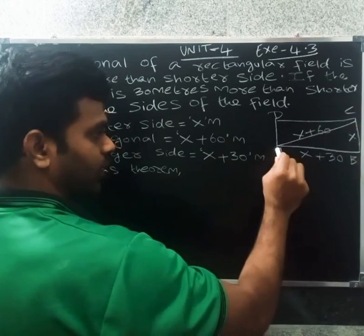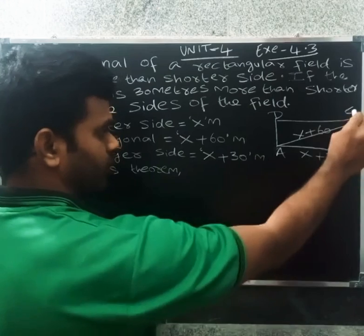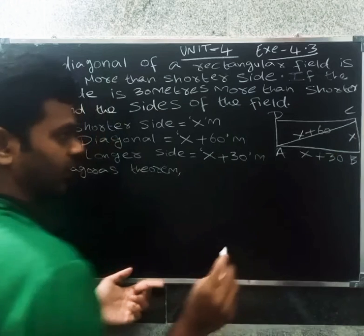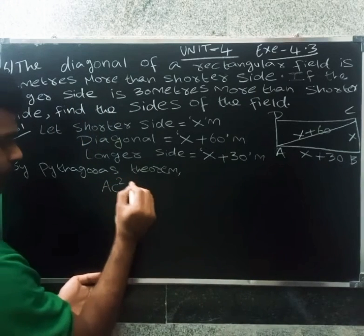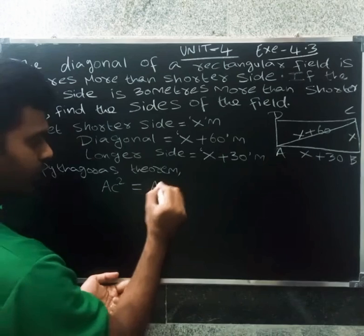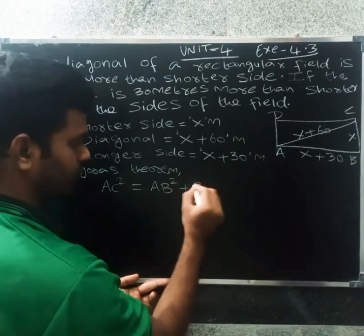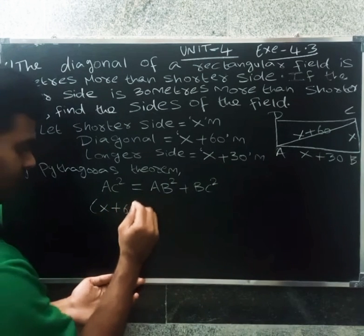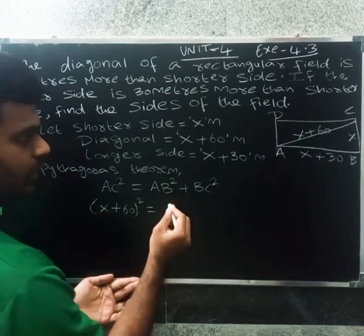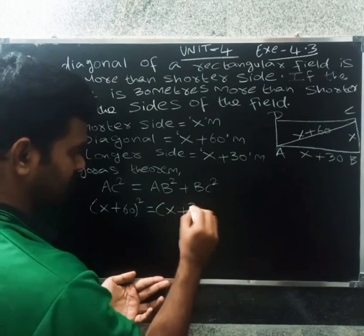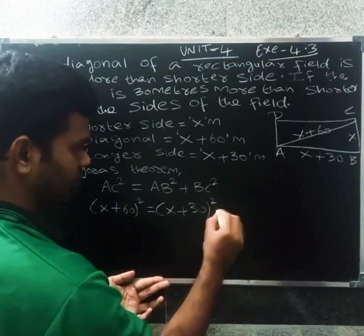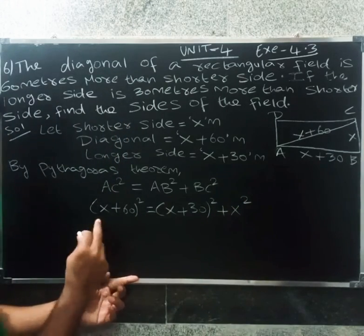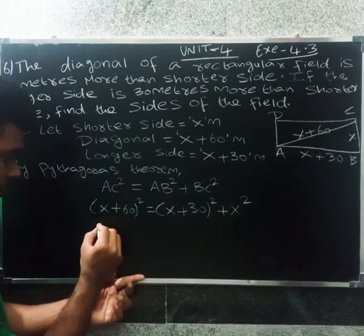Now, AC squared equals AB squared plus BC squared — the diagonal squared equals the sum of the squares of the remaining two sides. So AC squared equals AB squared plus BC squared. Substituting the values: AC = x plus 60, AB = x plus 30, and BC = x.